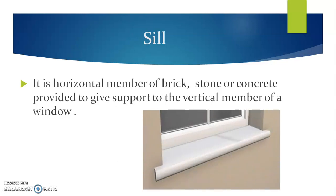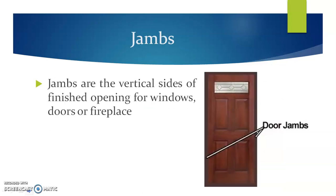Sill. A sill is a horizontal member made up of either brick, stone, or concrete, and it is provided to give support to the vertical member of a window. This is also used to denote an important level in construction called the sill level. Whatever plans we develop, they are sections taken at sill level. Then jambs. Jambs are the vertical sides of the finished opening for either a window, door, or fireplace. The figure indicates door jambs.